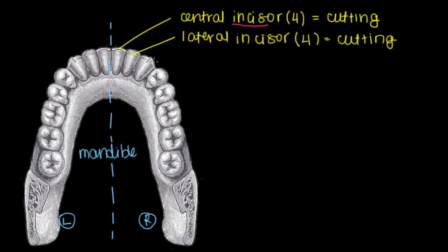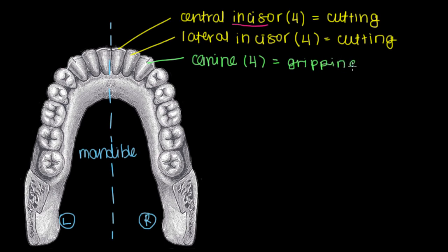Now let's move on to talk about our canines. This is our canine tooth, and we've got four of them in total. The canine teeth are also known as fangs — they're the sharpest, longest teeth we have, and they're actually used for gripping and pulling. Imagine when you're at a restaurant and they give you a bread basket; you put a piece of bread in your mouth and pull away at it, tearing it apart, because your canine teeth are gripping the bread as your hand pulls the rest of it away.